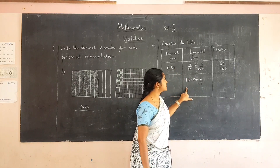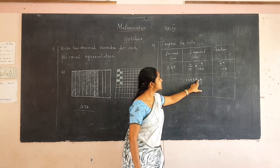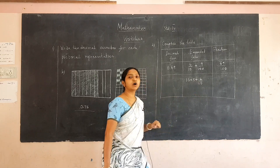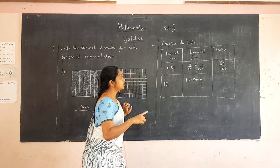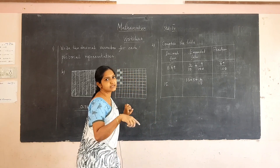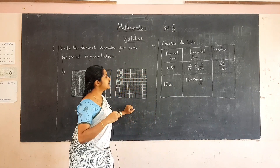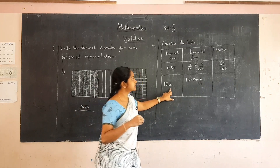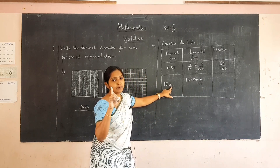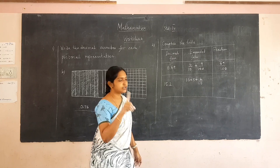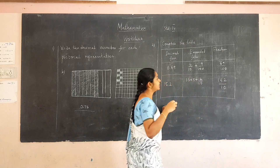Here the expanded form is given and we are going to write the decimal form and fraction. Ten plus five plus two by ten. Ten plus five are whole numbers; ten plus five is fifteen, so the whole number part is fifteen. Next, two by ten — so in the tenths place, the first decimal digit is two. The decimal number is fifteen point two. After the decimal point we are having only one place value, so we have to divide one hundred and fifty-two by ten. So one hundred and fifty-two by ten is the fraction.